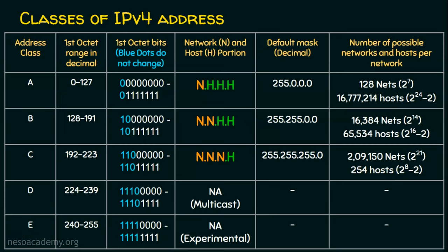In case our requirement is 300 hosts, we can't go for Class C because the maximum number of hosts possible is 254 only. In order to handle 300 devices, we need to go to Class B, where we can have a maximum of 65,534 hosts per network. But Class B wastes a lot of IP addresses — 65,534 minus 300 equals 65,234 IP addresses wasted. That's a huge number of IP addresses we are wasting.